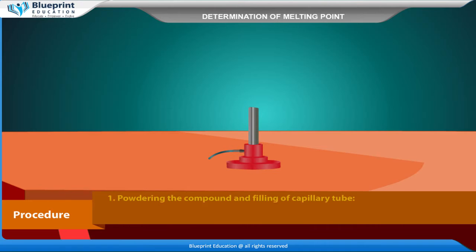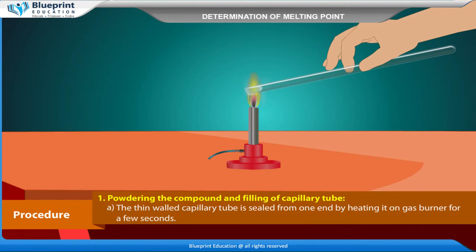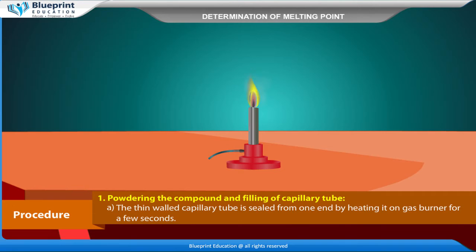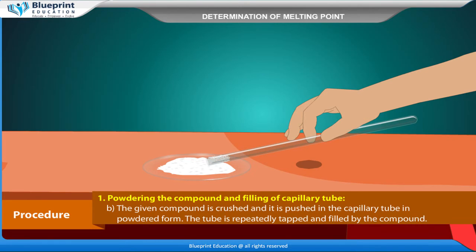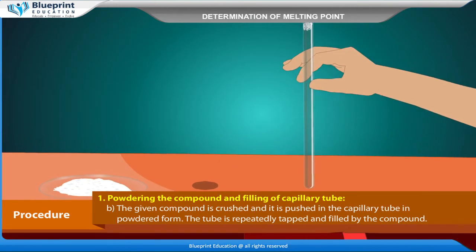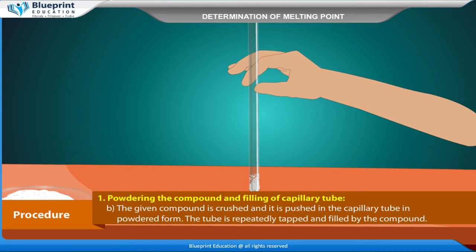Procedure — Powdering the compound and filling the capillary tube: The thin-walled capillary tube is sealed from one end by heating it on a gas burner for a few seconds. The given compound is crushed and pushed into the capillary tube in powdered form. The tube is repeatedly tapped and filled with the compound.